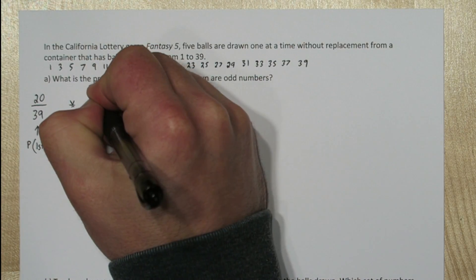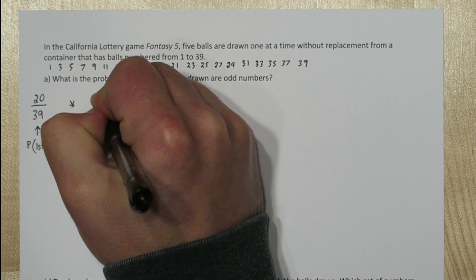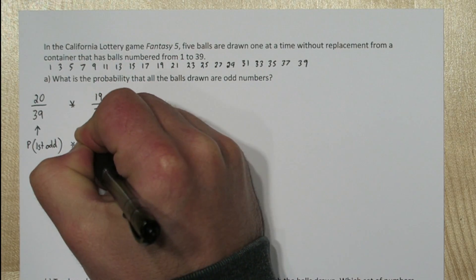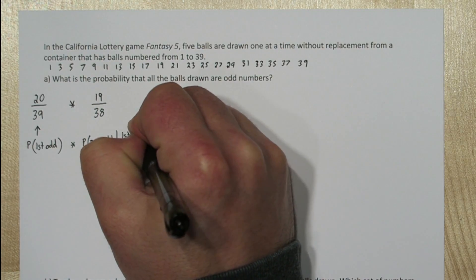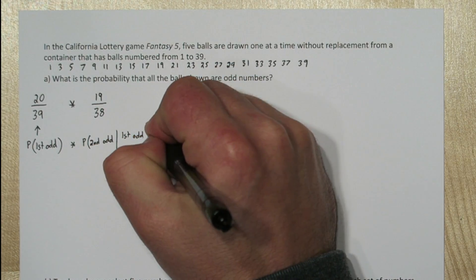Once that first odd number has been selected, there's only 19 odd numbers left, out of a total of 38 numbers. So the probability that the second number is odd, given that the first number was odd, is 19 over 38.